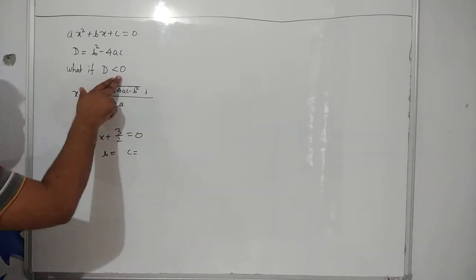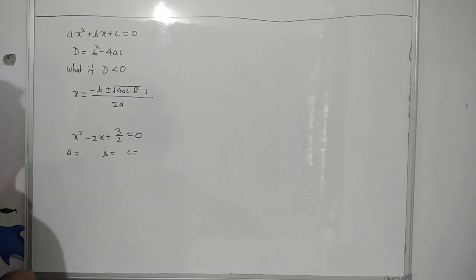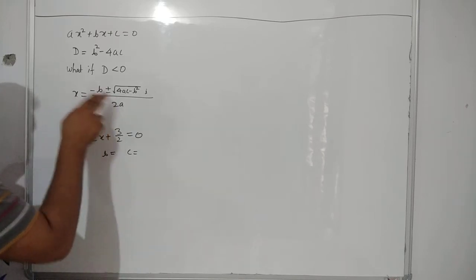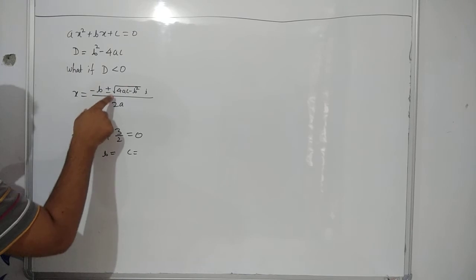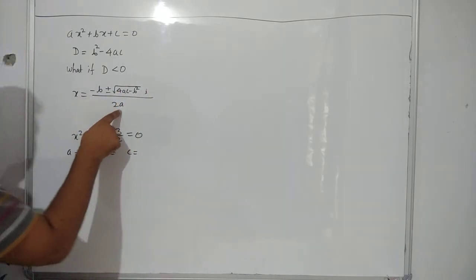But earlier, when discriminant was negative, we had to stop there. But now, there is a solution. How to find out? In this case, very simple, when d is less than 0, you have to put this formula minus b plus minus root of 4ac minus b square into iota upon 2a.